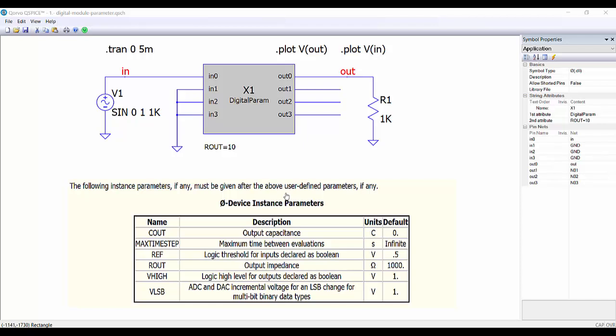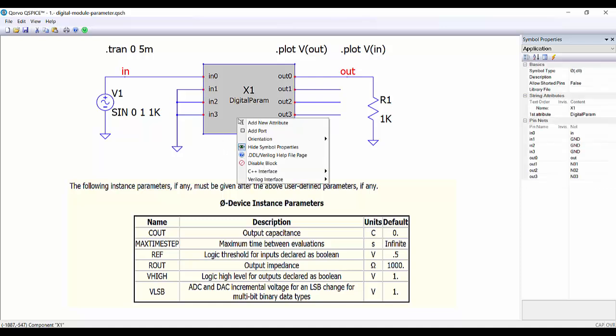But there is an issue here. If we go to the help file, we can read this: the following instance parameters, if any, must be given after the above user-defined parameters, if any. So if we want to add a user-defined parameter, then first we have to delete this one.